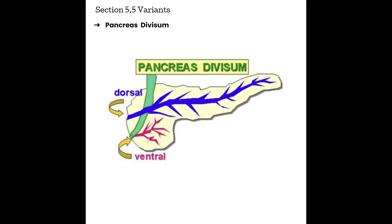Normally when developing, we have the ventral bud and the dorsal bud, and they fuse together to create the entire pancreas and the main pancreatic duct. In the case of pancreas divisum, the dorsal portion and the ventral portion never fuse, causing the dorsal portion to have its own ductal system and the head or ventral portion having its own ductal system and being the part that connects with the common bile duct. In a normal pancreas, the blue duct fuses with the ventral to complete the main duct, with the accessory duct entering separately.